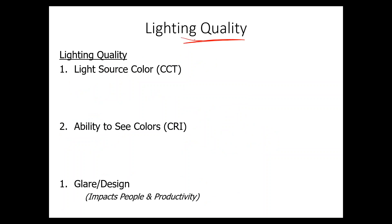Okay, let's talk about lighting quality now. Lighting quality is composed of three primary areas: the light source color, the color rendering index, and the function between glare and design. I can see I've got to write a three there. So, let's talk about light source color.